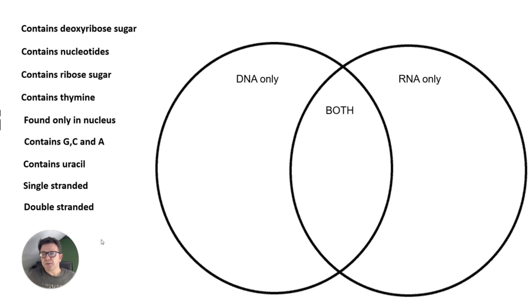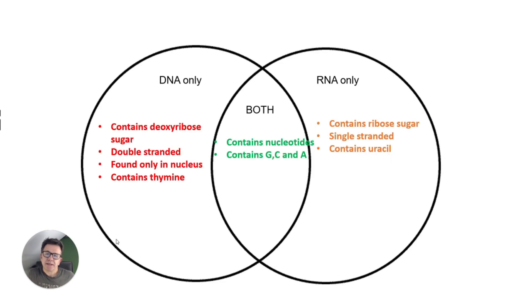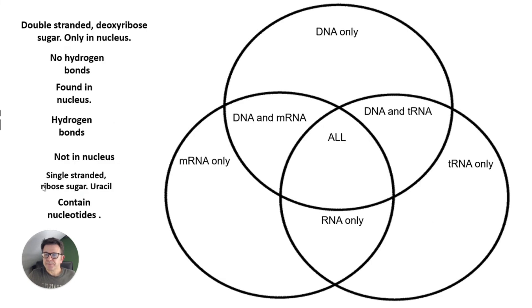Let's have a look at the answers. DNA only: contains deoxyribose sugar, double-stranded, found only in the nucleus, and contains thymine. RNA only: contains ribose sugar, single-stranded, and contains uracil. Both contain nucleotides and contain G, C, and A.